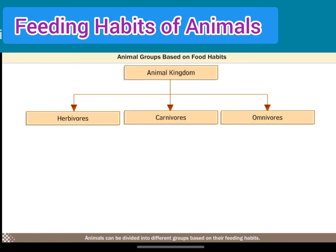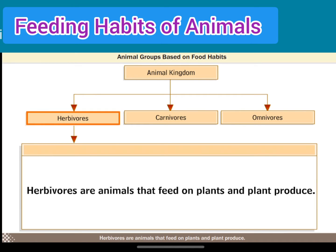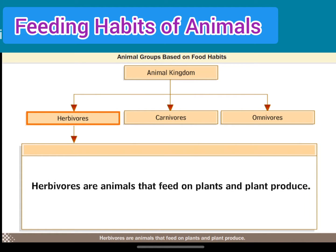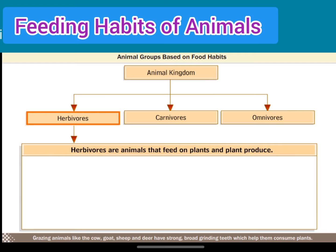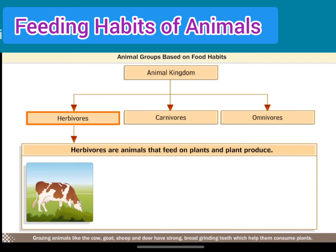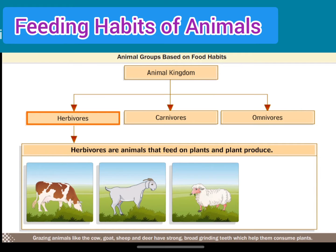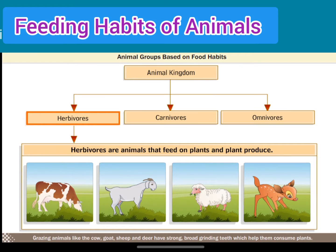Animals can be divided into different groups based on their feeding habits. Herbivores are animals that feed on plants and plant produce. Grazing animals like the cow, goat, sheep and deer have strong broad grinding teeth which help them consume plants.